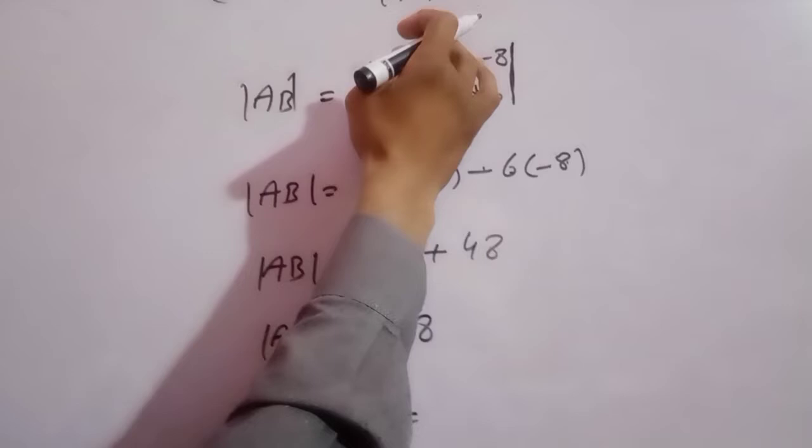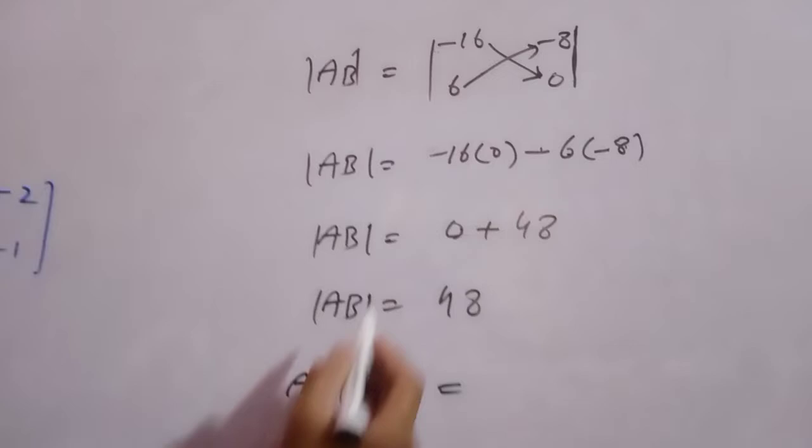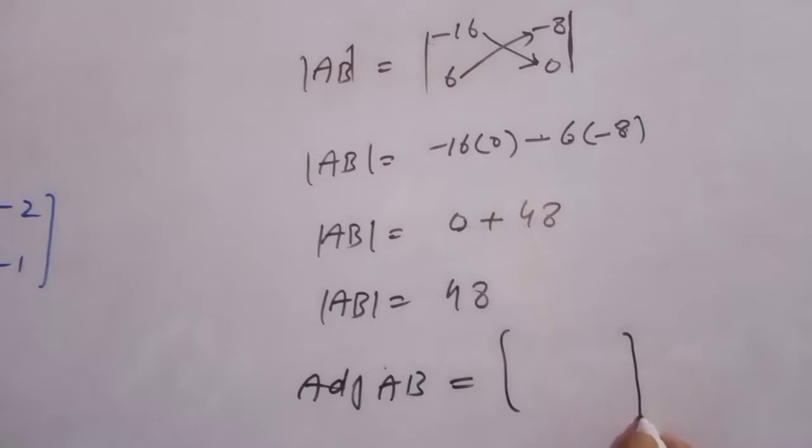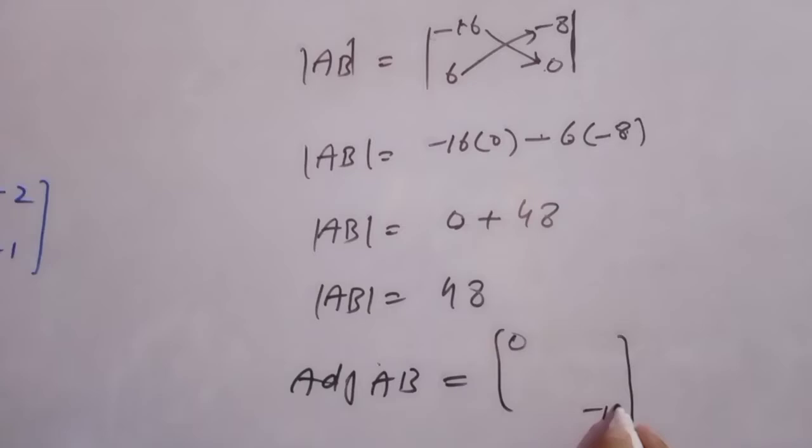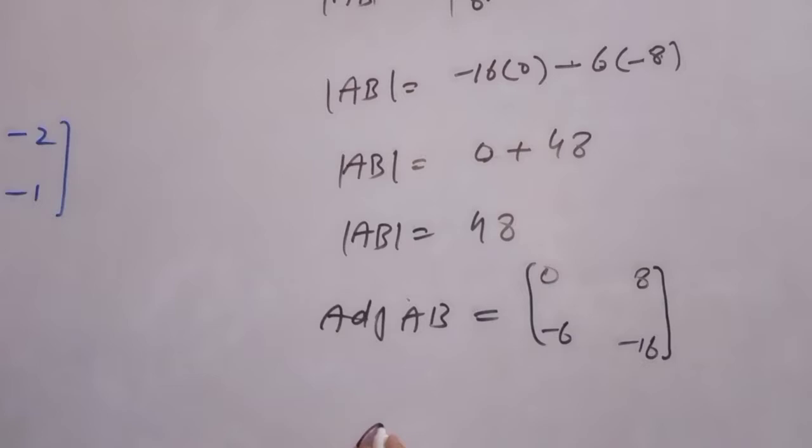Adjoint find करते हैं: AB matrix की values/entries हैं। इसमें जो diagonal entries हैं उनकी जगह तबदील करेंगे — यह diagonal है। Minus 16 और 0 exchange होंगे: 0 यहाँ पर आएगा, minus 16 वहाँ; और इनकी sign: 8 plus हो जाएगा और minus का 6 रहेगा।